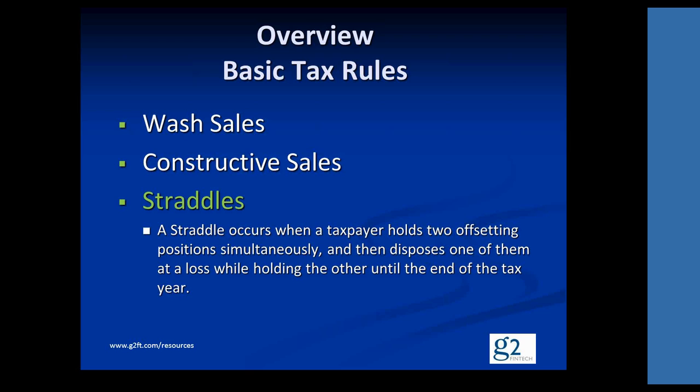Please note that this is prior to the Section 1256 rule, because some of you who have good experience with how commodity futures work will know that nowadays, if you buy and sell futures, you can do straddles all you want because all the gains and losses are subject to the 60-40 rule, which is governed by Section 1256. But back in the 70s, that rule didn't exist, and so gains on futures were treated like capital gains and losses on other types of property.